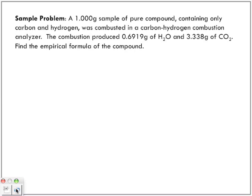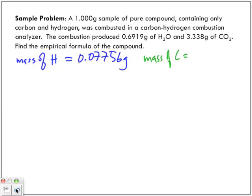Now with the same sample problem, we are going to find the empirical formula of this compound. To do that, we use the information from the first part: the mass of hydrogen was 0.07756 grams and the mass of carbon was 0.9109 grams.